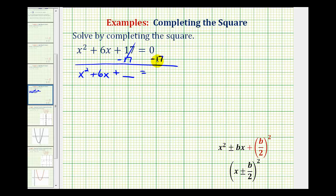And then on the right side of the equation we have negative 17. And if we add a constant on the left side of the equation, we're going to have to add the same constant to the right side. So we'll add the constant here as well.